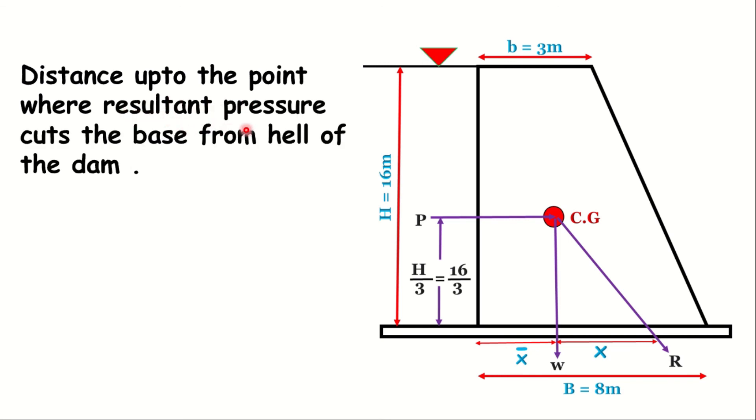Distance up to the point where resultant pressure cuts the base from the heel of the dam = X̄ + x = 2.94 + 3.04 = 5.98 meters.